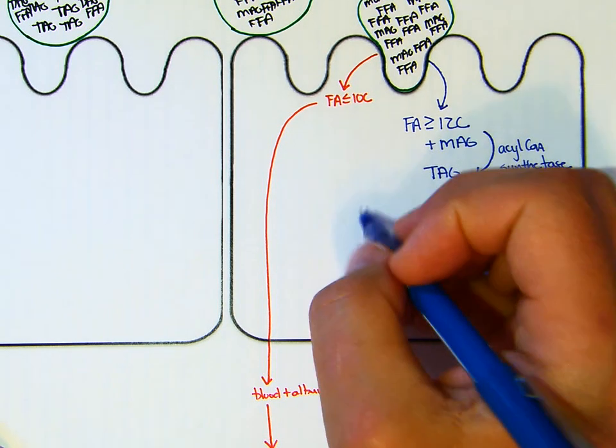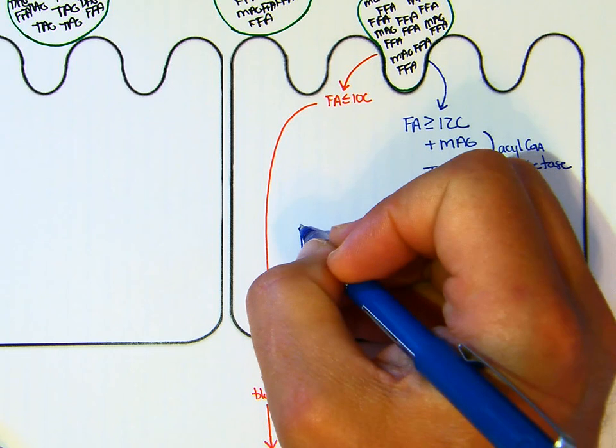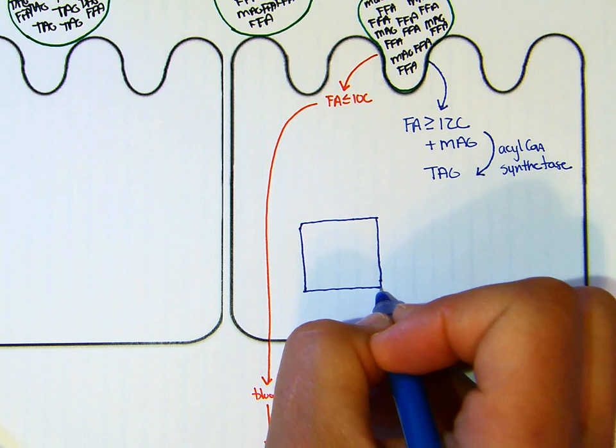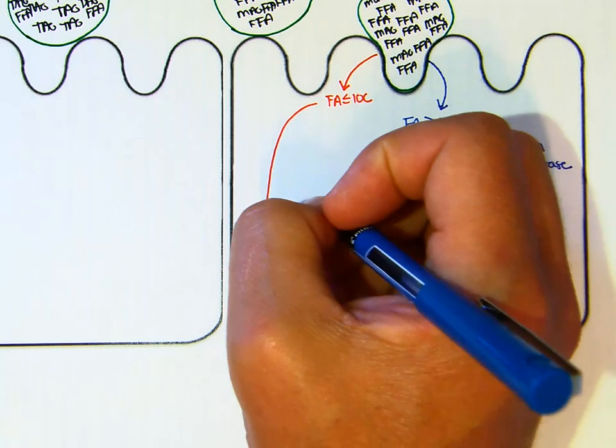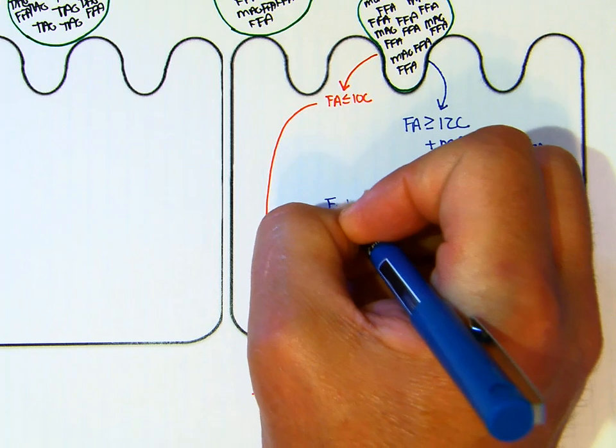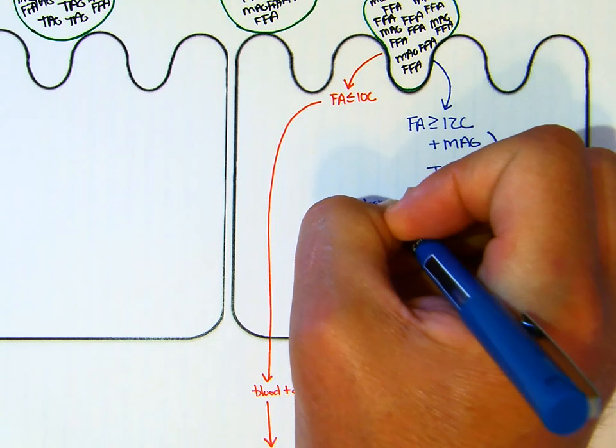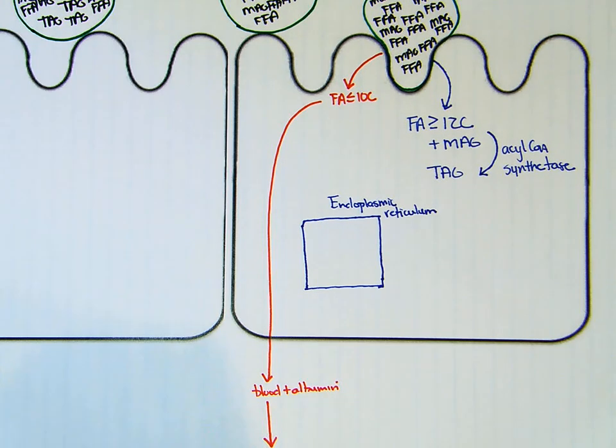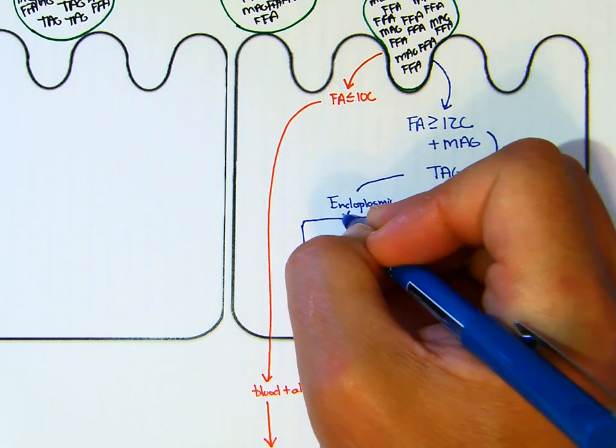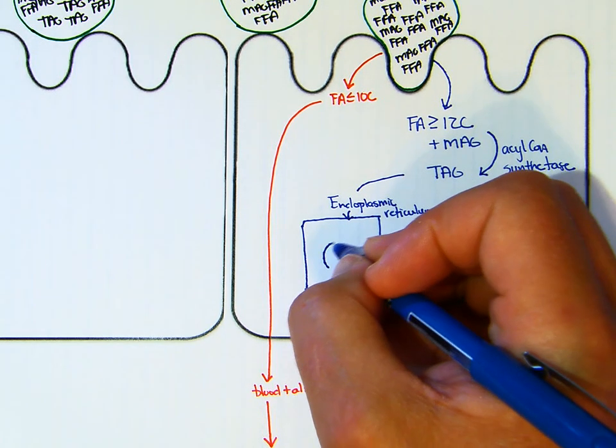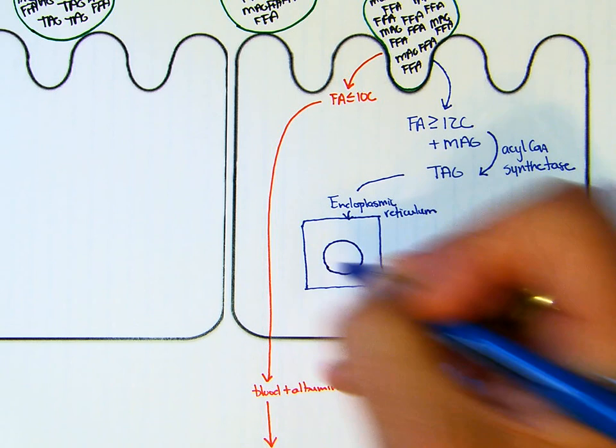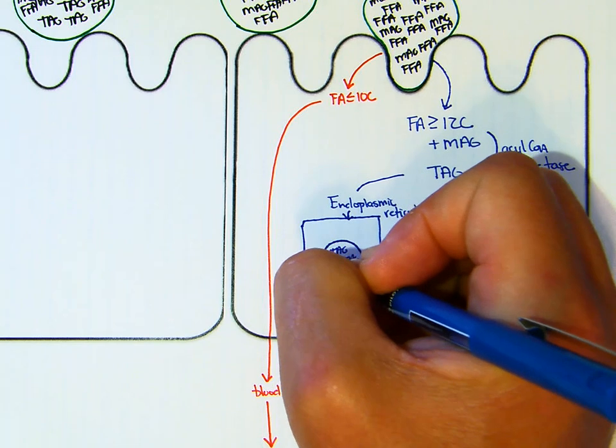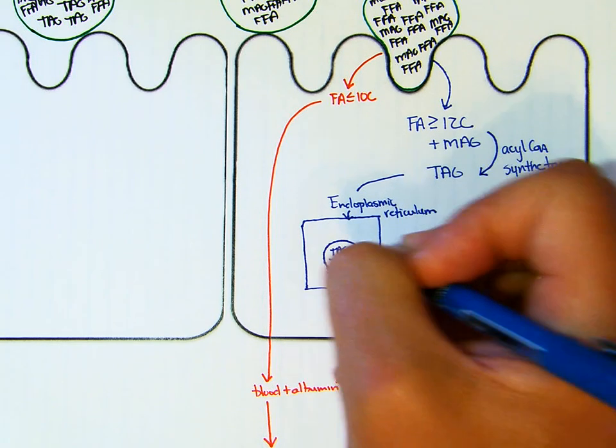From there, we're going to draw an endoplasmic reticulum. I have no idea what that looks like, so we're going to make a box and call that box the endoplasmic reticulum. This TAG is going to accumulate in the endoplasmic reticulum. So we have a whole bunch of TAGs.